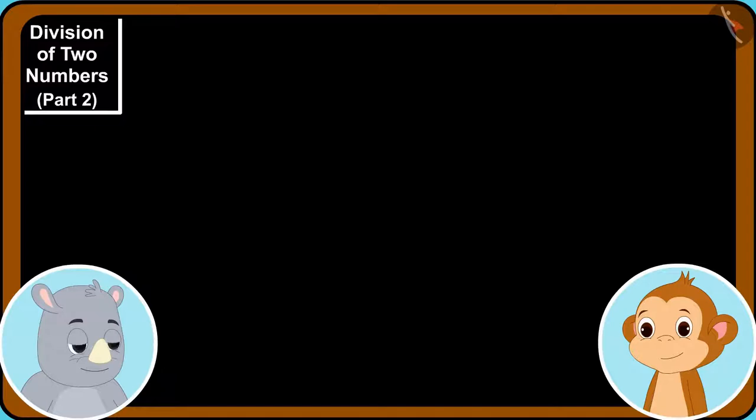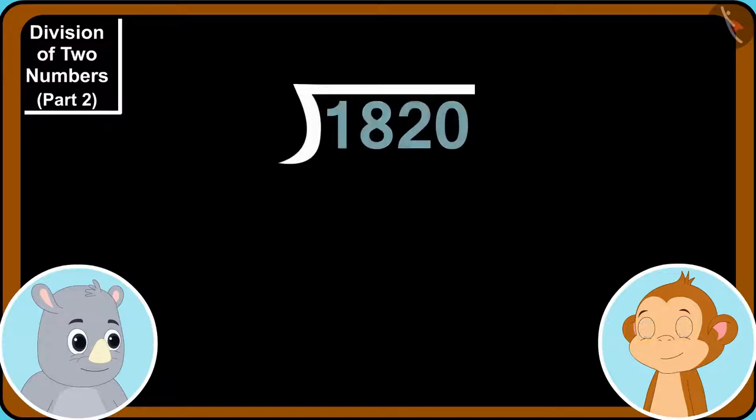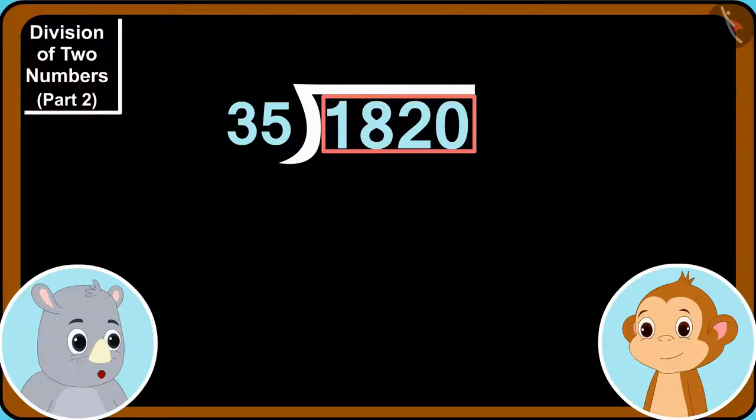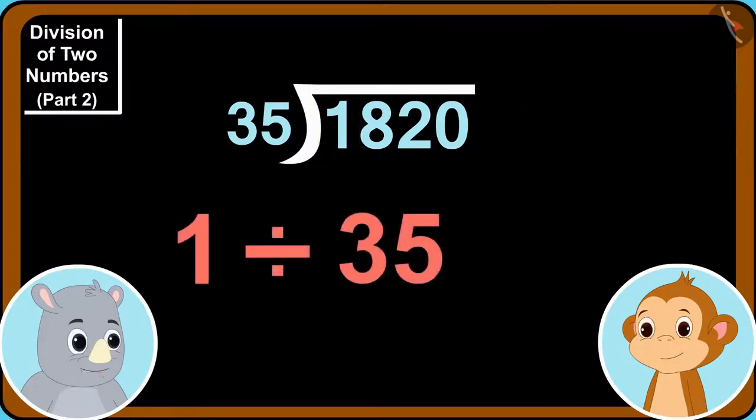Gaggu wrote these numbers on a paper like this. Look Babban. Here, we are dividing 1820 by 35. First, we start with the number written in 1000th place. Can we divide 1 by 35? Gaggu asked Babban.